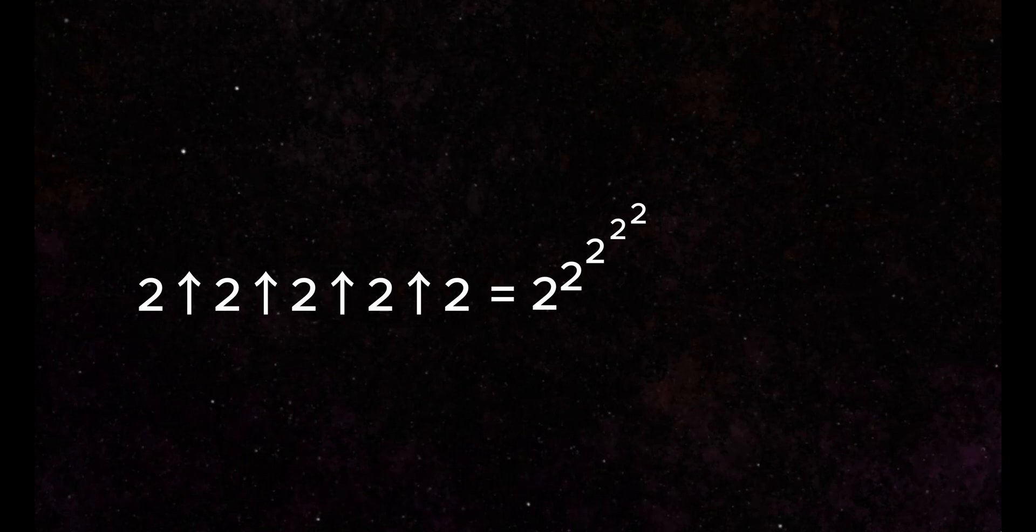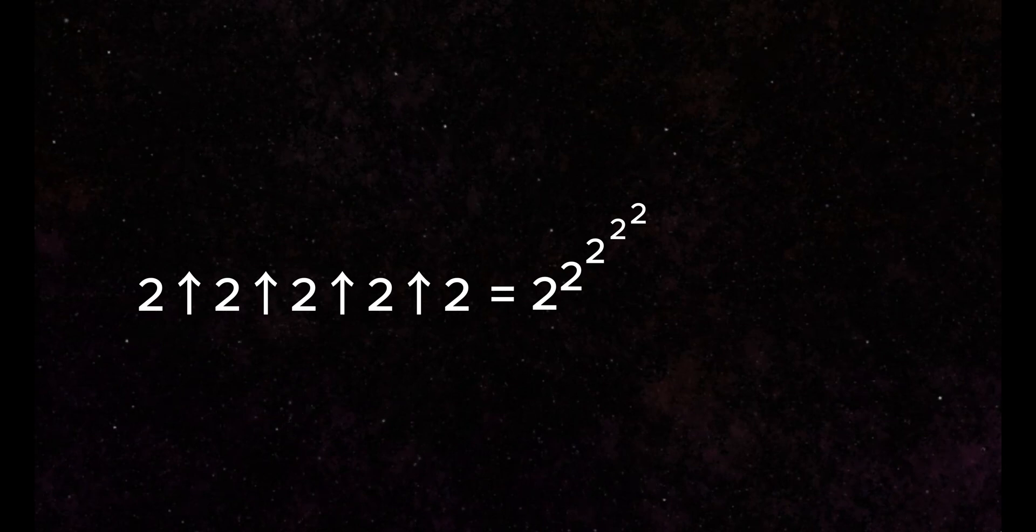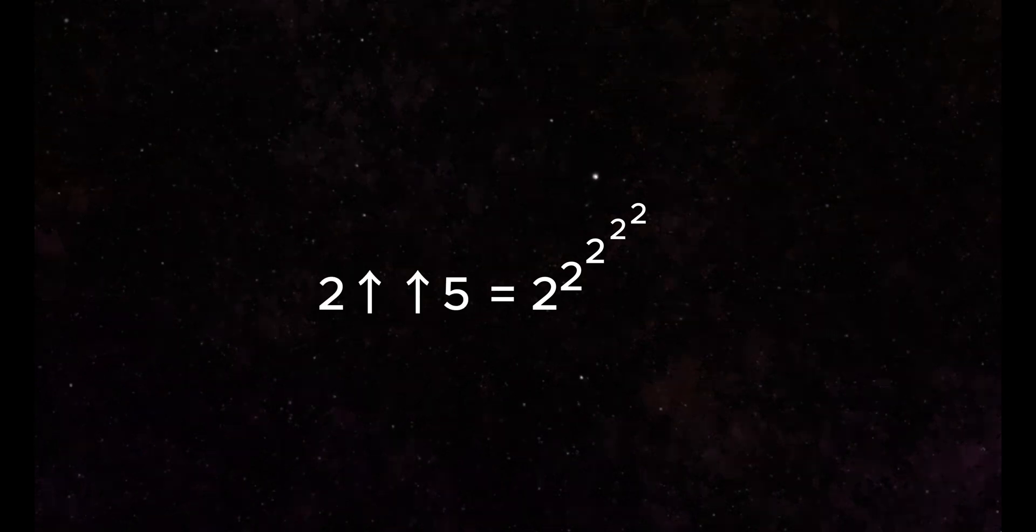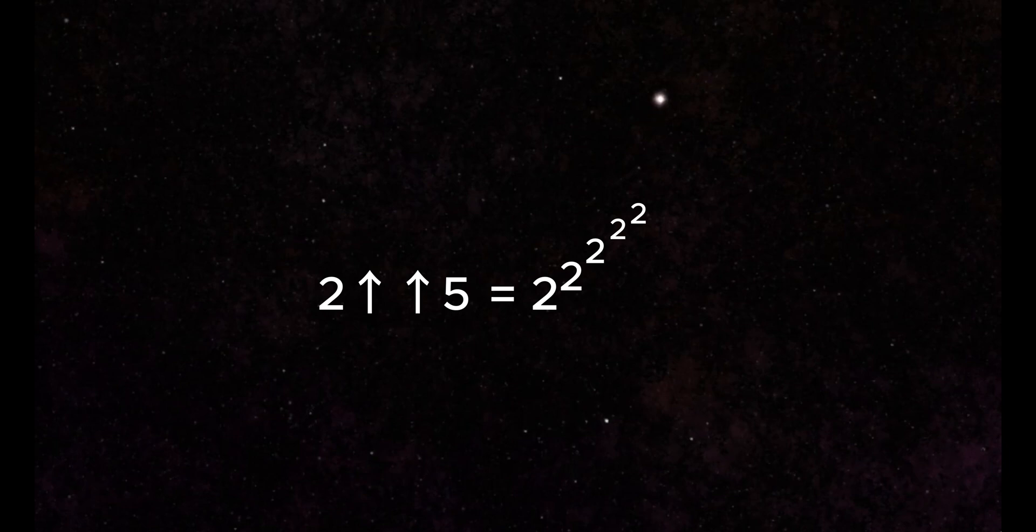This becomes a bit clunky to write out, however, which is where tetration comes in. Instead of writing out a group of five single arrows, each followed by two, we instead use a double arrow, where two double arrow five indicates that we have a stack of twos that is five high.